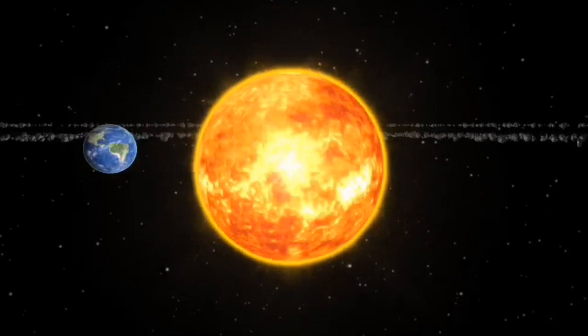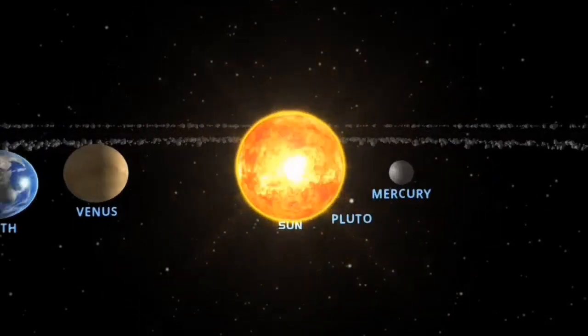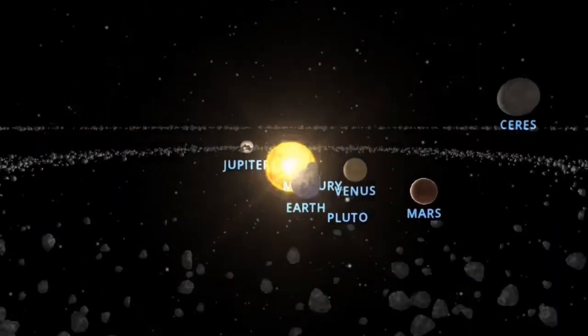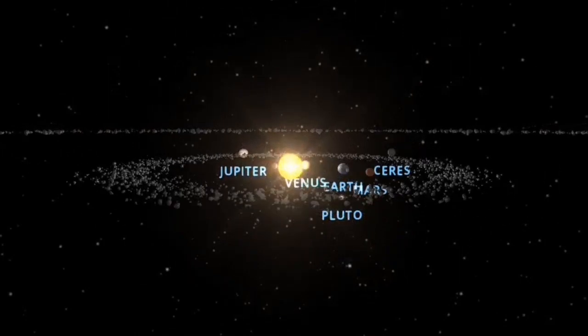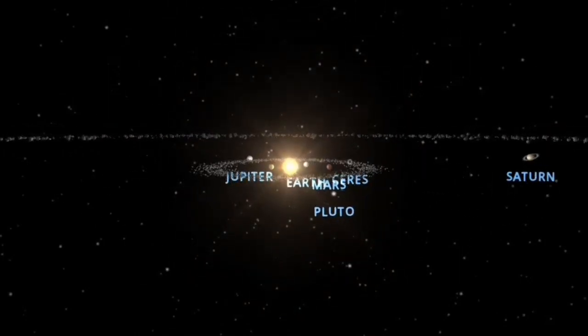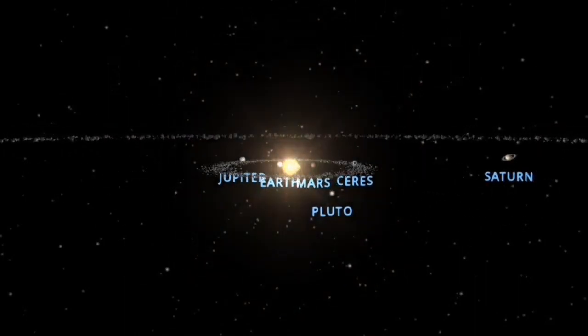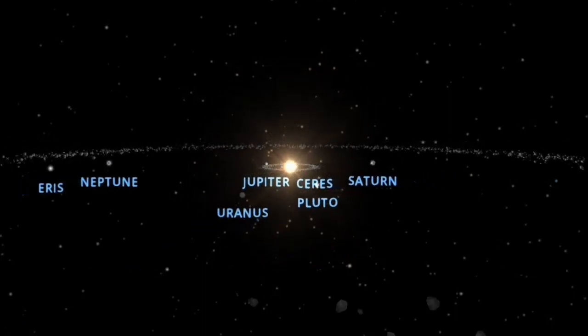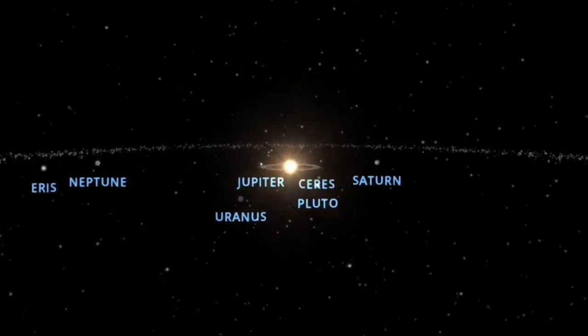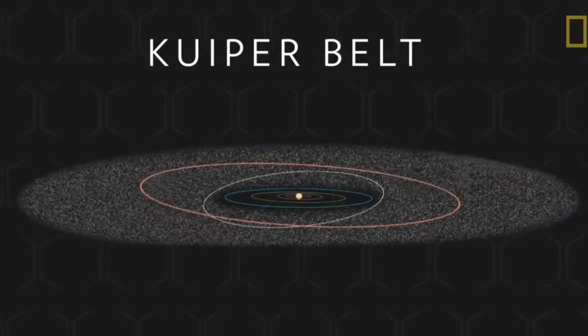But after you pass Pluto and Eris, and if you go very far away, you are going to meet with the Kuiper belt, which is a region of asteroids, like the asteroids which are between Mars and Jupiter. And also, there are some comets here, because it is too cold.